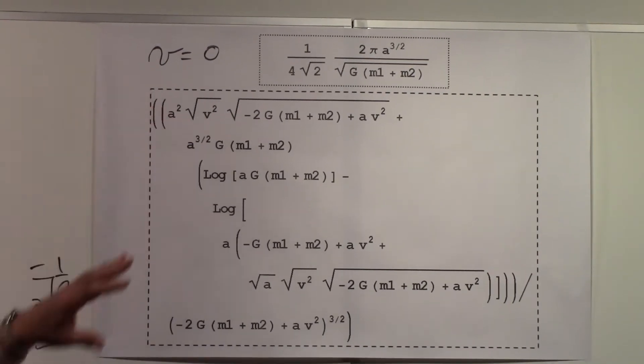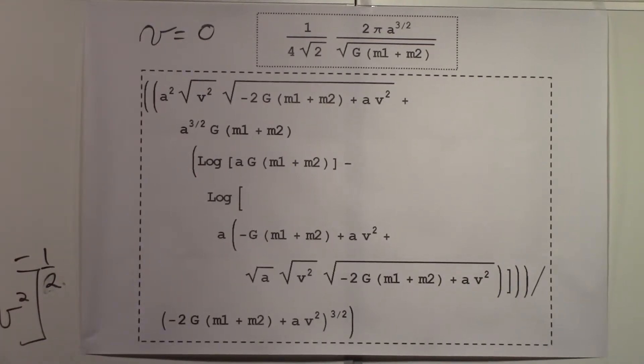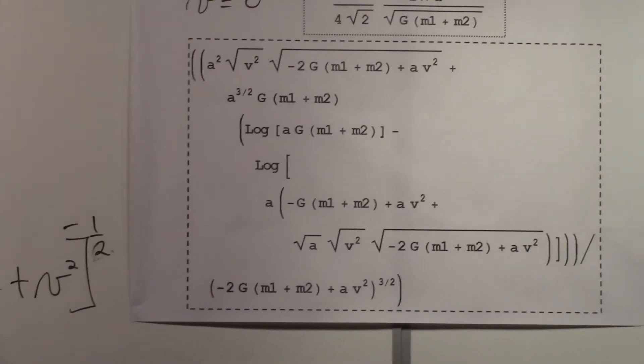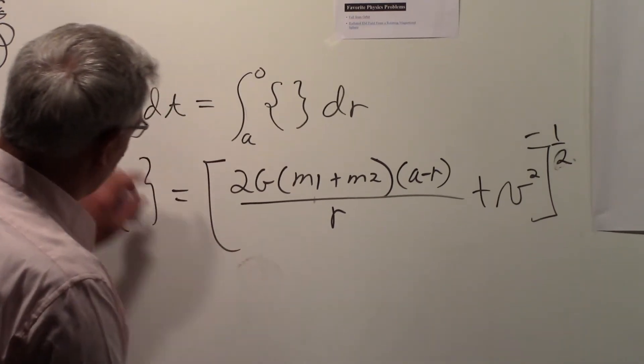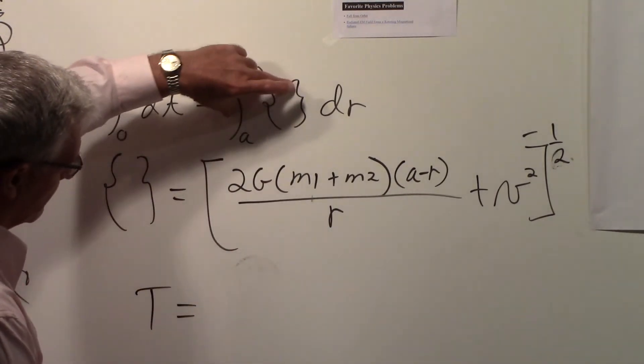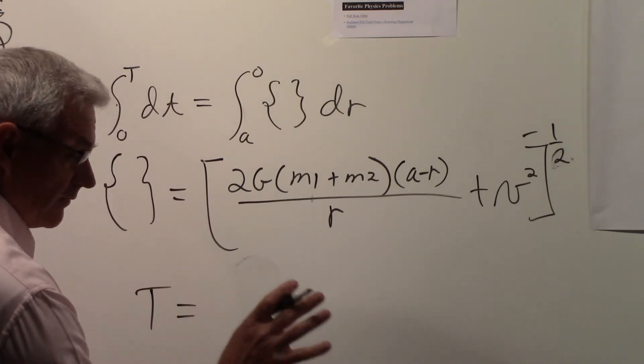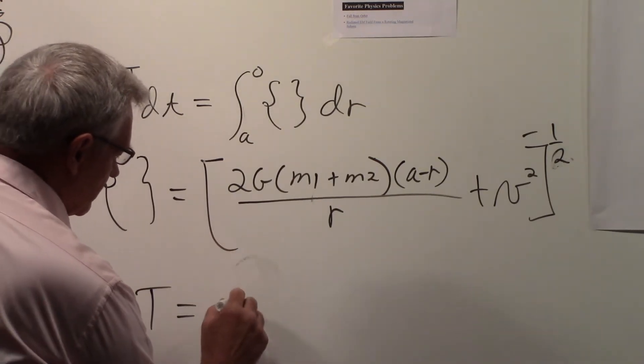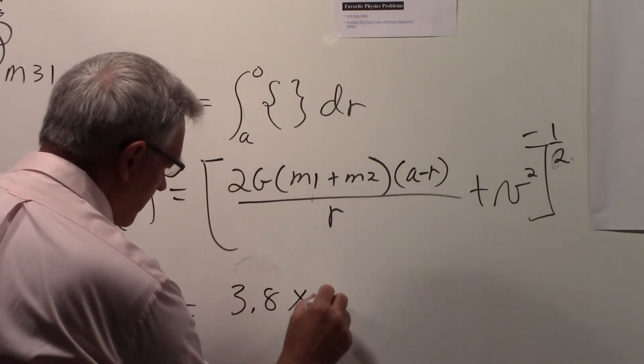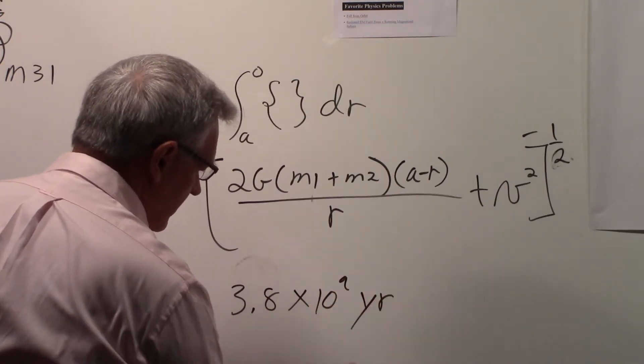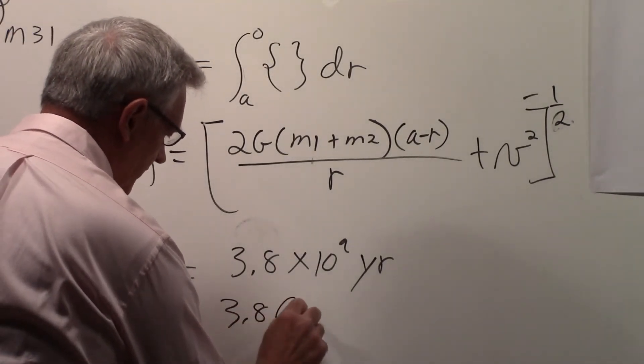If you plug in the values that we had earlier for M1, M2, and for the velocity of 1.5 times 10 to the fifth meters per second, this will work out to, when you do the integration, you'll have T is equal to, converting the time which will be in seconds to years, you'll get 3.8 times 10 to the ninth years. So that's 3.8 billion years, giga years.